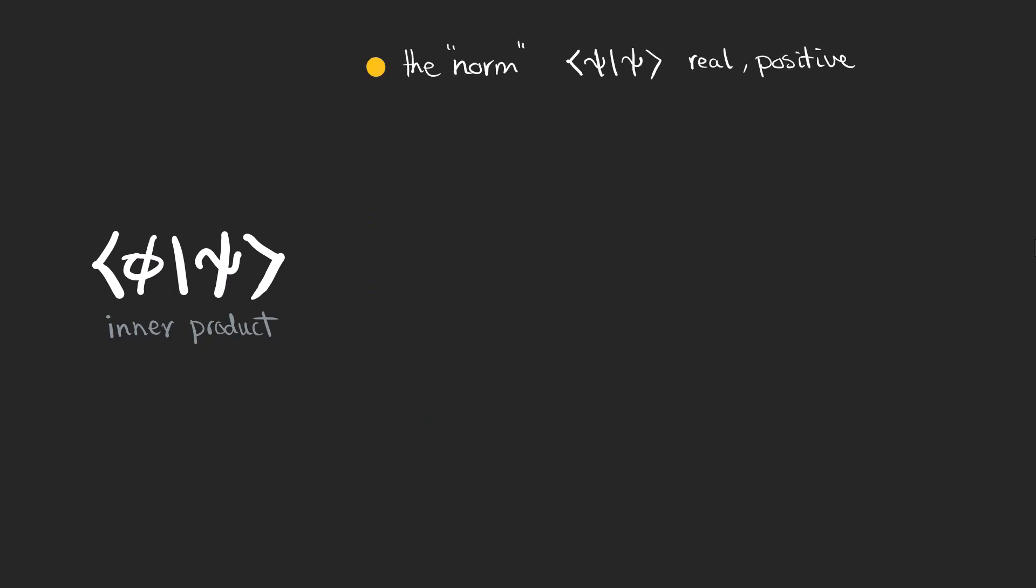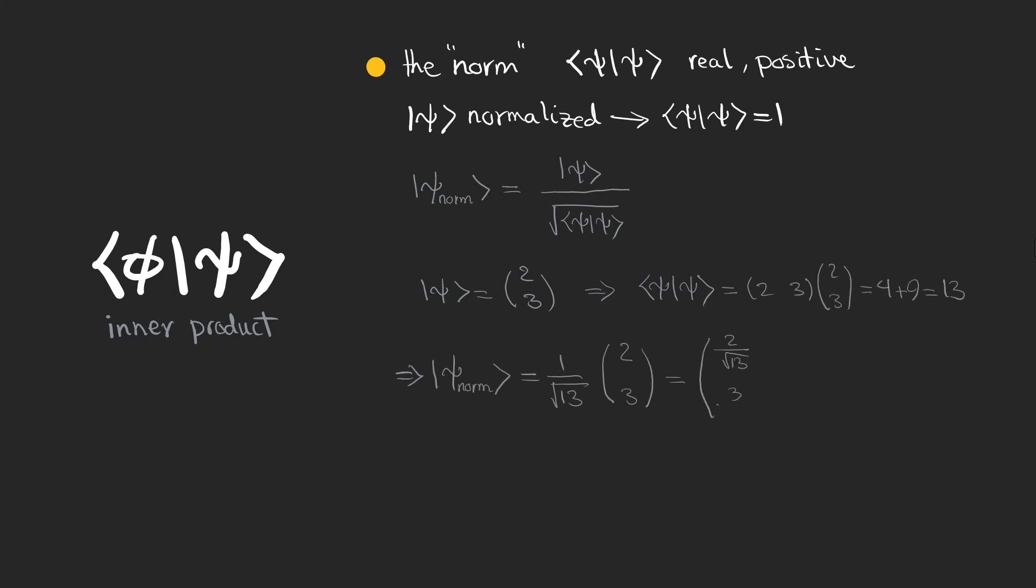The norm of a state vector is real and positive, and if the state is normalized, the norm is equal to 1. We can normalize a state ket by dividing the state by the square root of its norm. For example, take this state. The norm can be calculated to be 13, and the norm of our normalized ket is equal to 1.